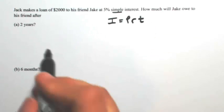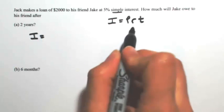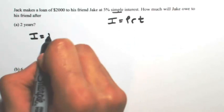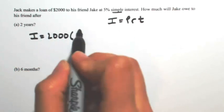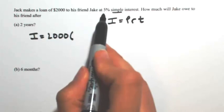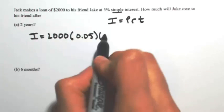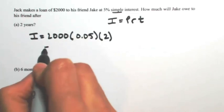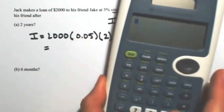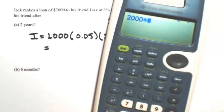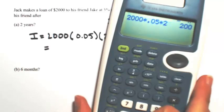If we're talking about two years, then I is going to equal the principal, which is how much you start with, $2,000, times the rate of interest. Keep that as a decimal, so 5% is 0.05. And then the time in this case is two years. Multiplying that together, we get interest of $200.